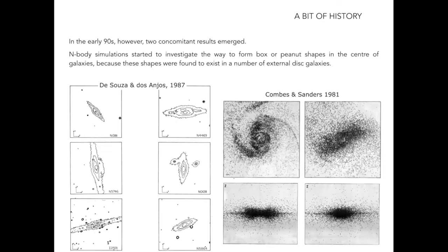After decades of models, we understood the formation of these structures and which orbits or stellar populations compose them. Boxy and peanut-shaped bulges are the manifestation of the same phenomenon: a stellar bar. As shown in this simulation by Martina Valenzuela 2006, we start with a thin disk seen edge-on; a bar forms in the central parts, and this bar goes through vertical instabilities leading to buckling, ultimately forming a clear peanut X-shape.